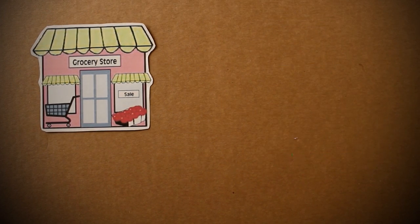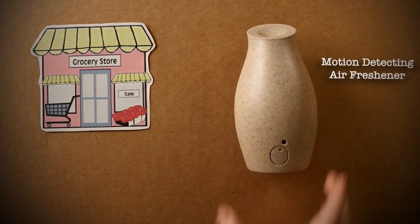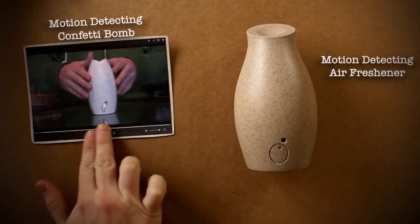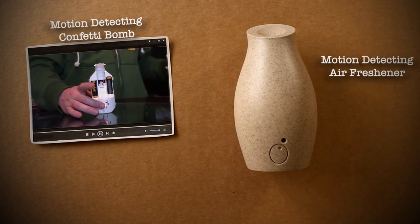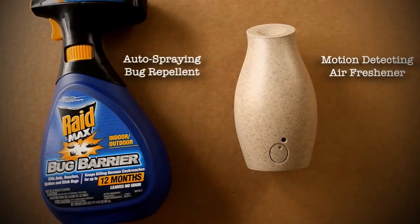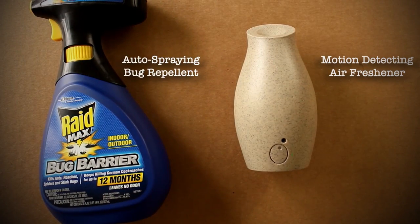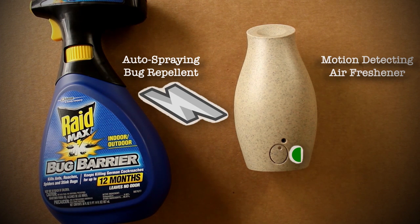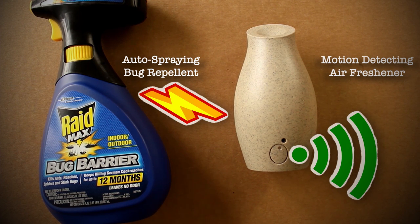Two promising items I found were this motion-detecting air freshener, yes the same one I used for my motion-detecting confetti bomb, and then this bug repellent with an automatic sprayer. The rough idea is to combine these two so that the motion detector triggers the automatic sprayer.